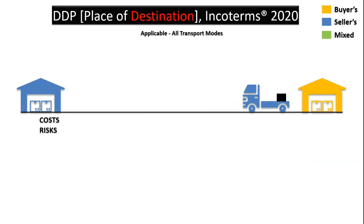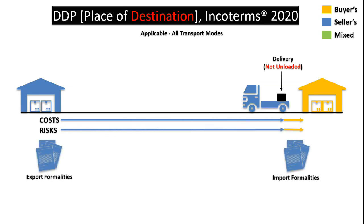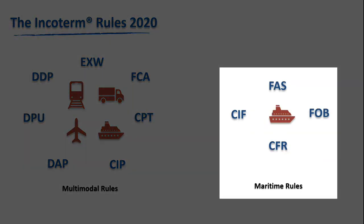In DDP, or Delivered Duty Paid, the seller has the maximum responsibility, cost, and risk. The seller must arrange to bring goods to the place of destination ready for unloading by the buyer, and is also responsible for not only export but also import formalities.